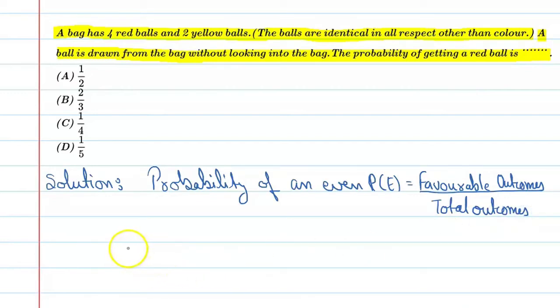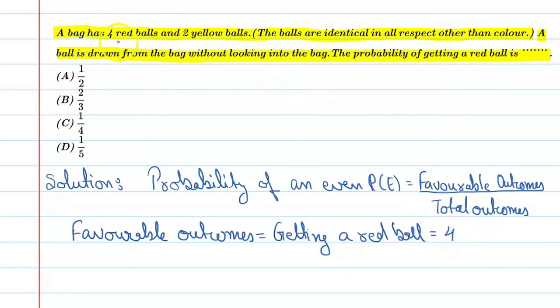So favorable outcomes is getting a red ball. Now let us know that favorable outcomes equals getting a red ball which is equal to four. So we have four red balls.